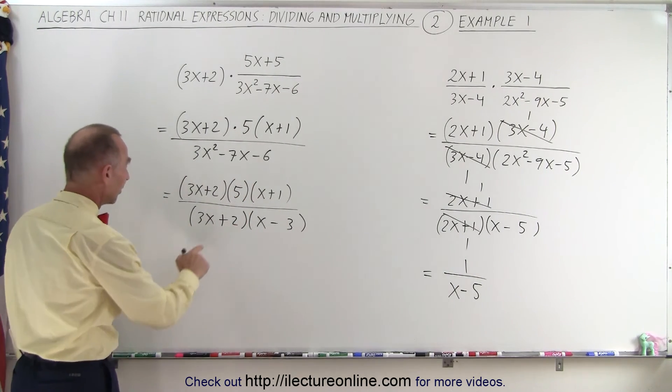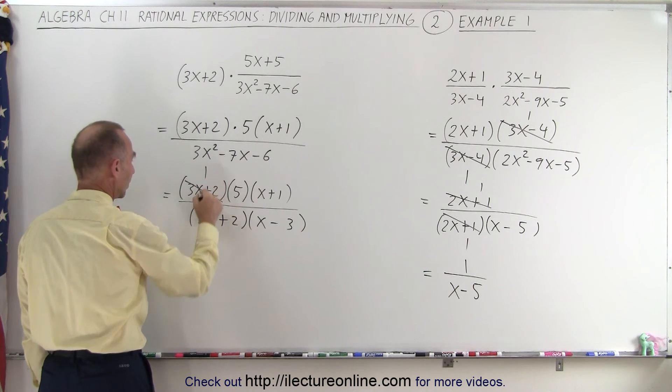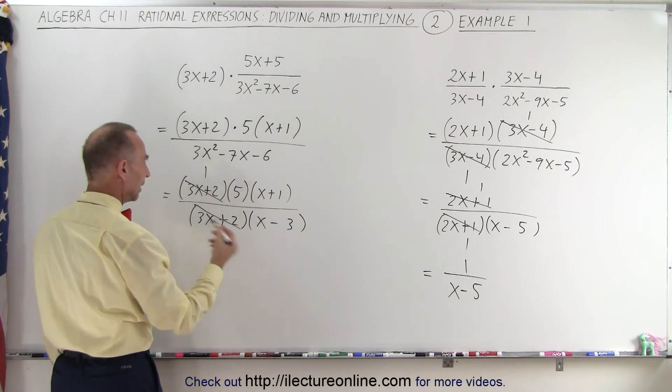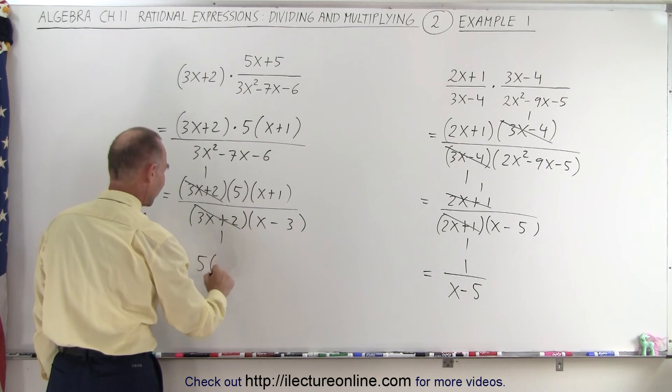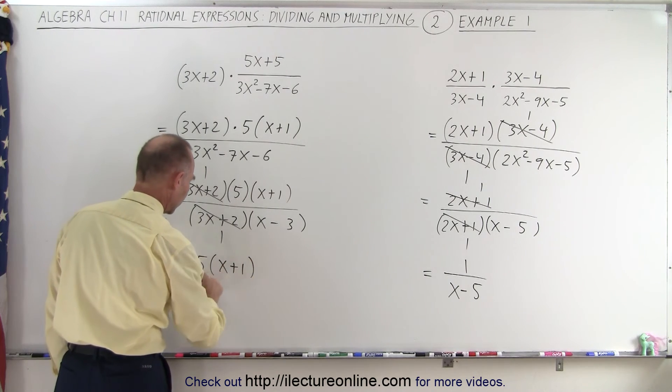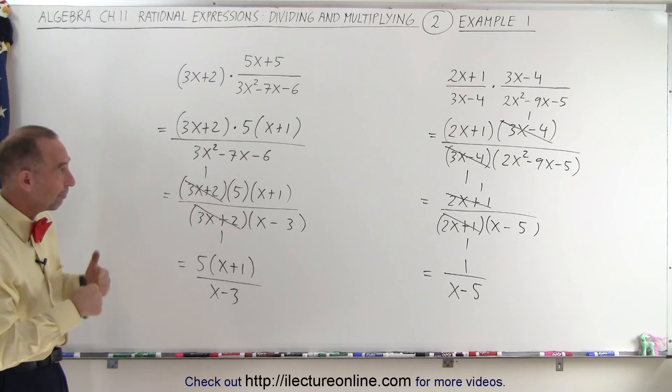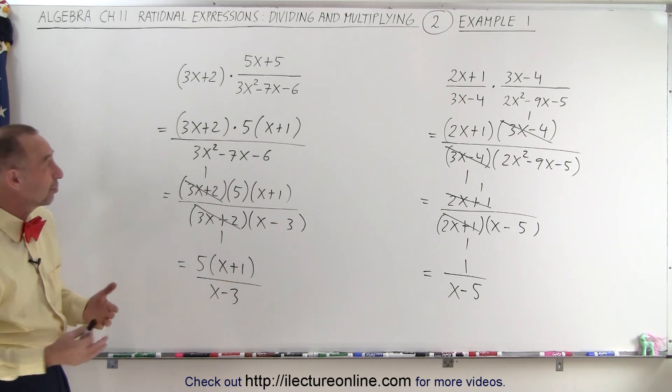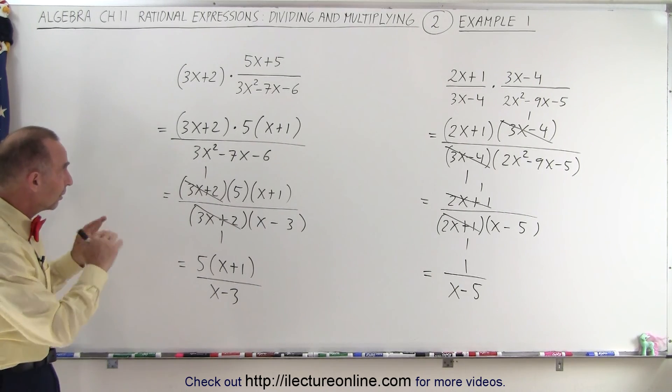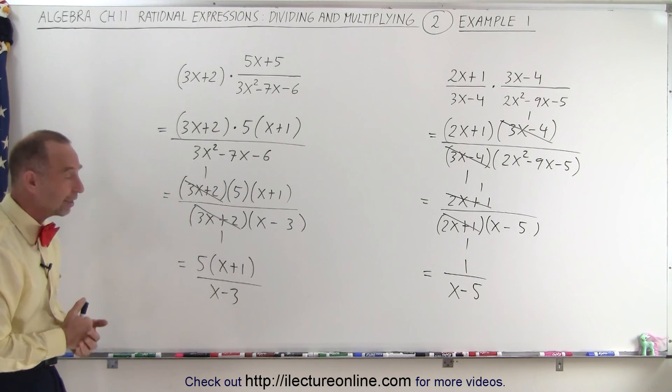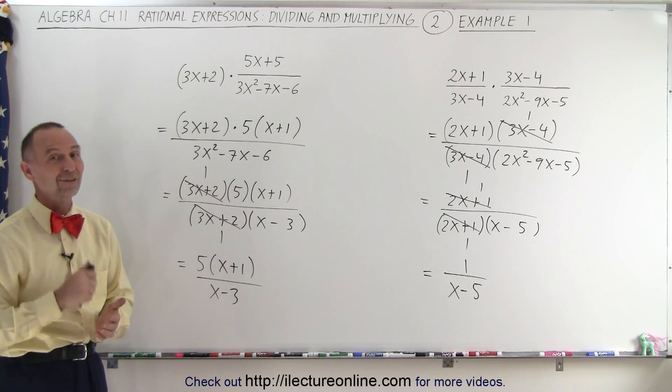Now, can we simplify some things? Yes, we can. We have a 3x plus 2 there and a 3x plus 2 here. And then I'm left with a 5 times x plus 1 in the numerator and an x minus 3 in the denominator. So you can see that these are fairly straightforward. It comes down to doing some factoring, doing some simplification, and there's the answer. And that is how it's done.